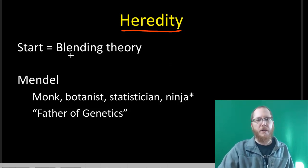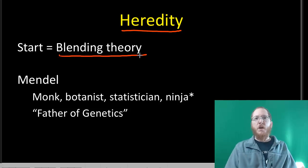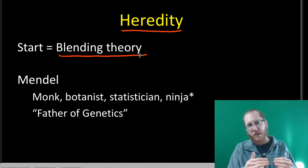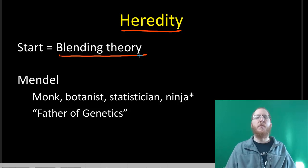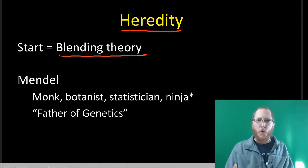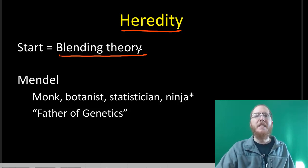Now around the time he started working, most people thought that the blending theory was the best explanation of heredity. In other words, if you took someone who was tall and you bred them with someone who was short, you should get a medium. Occasionally this did work out, but it certainly doesn't always work out. There's plenty of people that have children that are taller than either parent. Mendel started to suspect that something else was at play here, that this blending theory was not the answer to heredity.